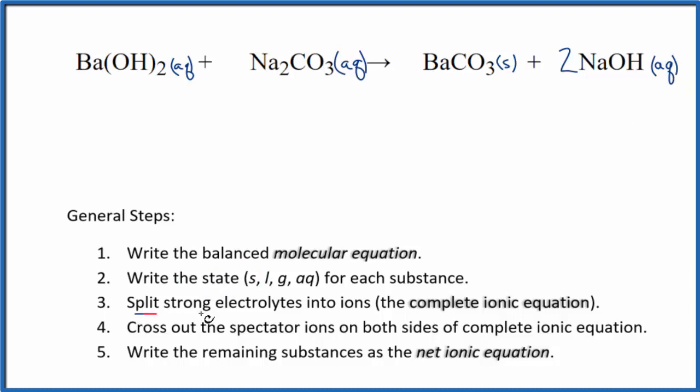Now that we have the states here, we can split the strong electrolytes into their ions. This will be the complete ionic equation. So barium's in group two. That'll be 2+. And then the hydroxide, the whole hydroxide here is 1-. So we have Ba 2+. I won't write the states now. Let's write that at the end. And then I have the two hydroxide ions.